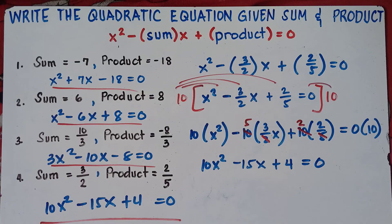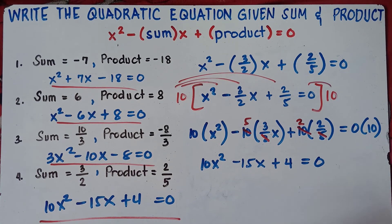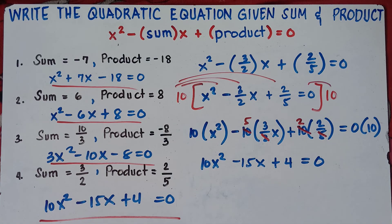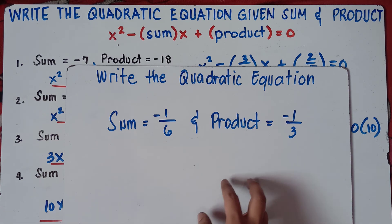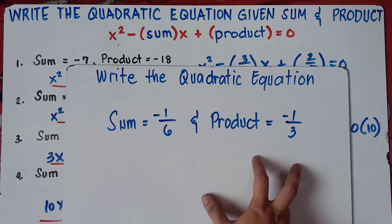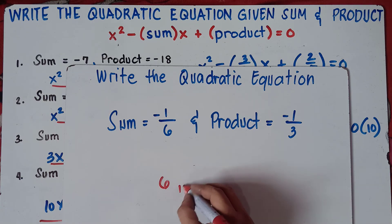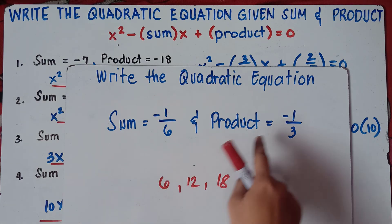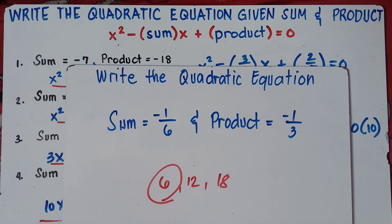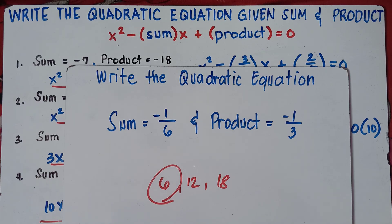This is easy to find the equation given the sum and product. Once again, if they don't have the same denominators, find the LCM — the least common multiple. Now you try to answer this one and put your answer in the comment section down below: write the quadratic equation where the sum is negative 1 over 6 and the product is negative 1 over 3. The LCM would be 6. This is Teacher MJ, and I hope you learned something new today. If you did, don't forget to like, share, and subscribe. Bye-bye!